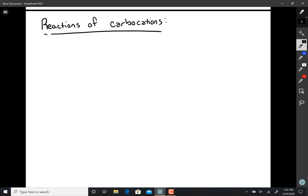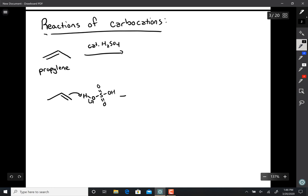Reactions of carbocations. So you take propylene, add in just a catalytic amount of acid. What do you get? Notice I don't have another nucleophile present. All I have is propylene and a catalytic amount of acid right there. So the mechanism: we protonate to form the most stable carbocation we can.